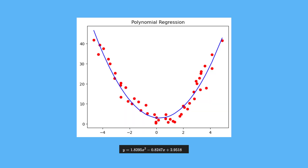This is an example of our polynomial regression model with actual values. I had this dataset, plotted it, and came up with a polynomial regression line. The equation is y is equal to 1.8295x squared minus 0.82x plus 2.95. So our bias term theta zero is 2.95, theta one is negative 0.82, and theta two is positive 1.8. Just by having a degree of two, we're able to model a curved relationship rather than just a linear one.